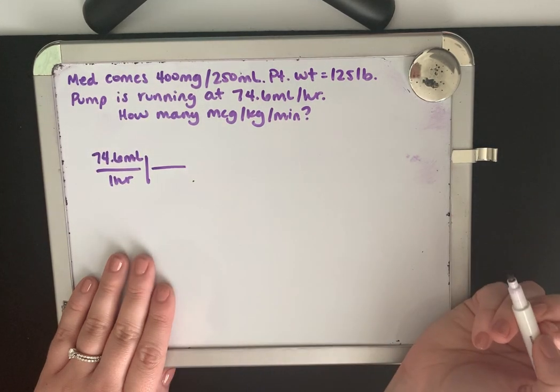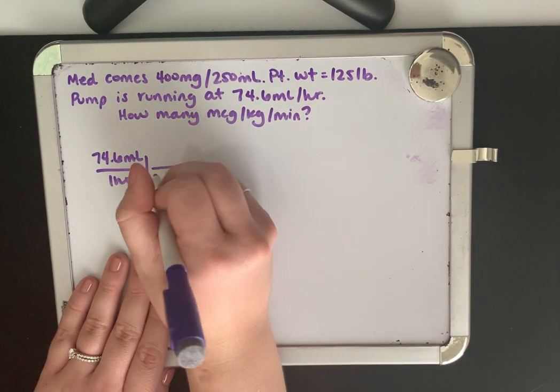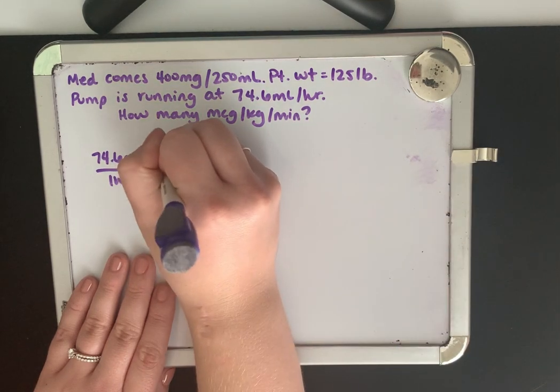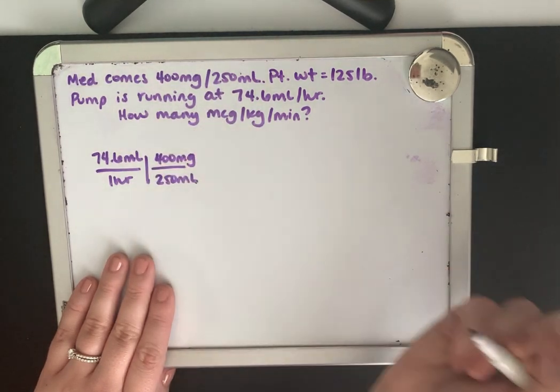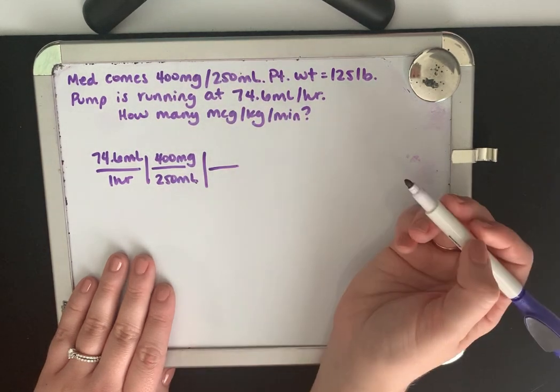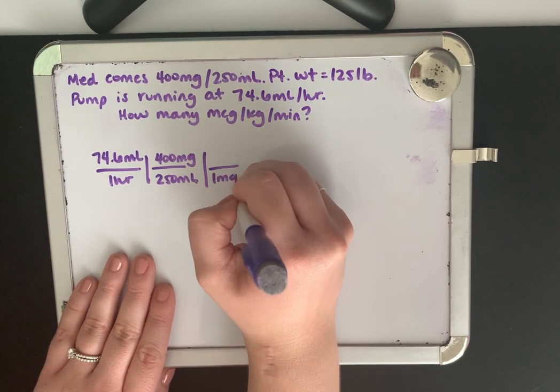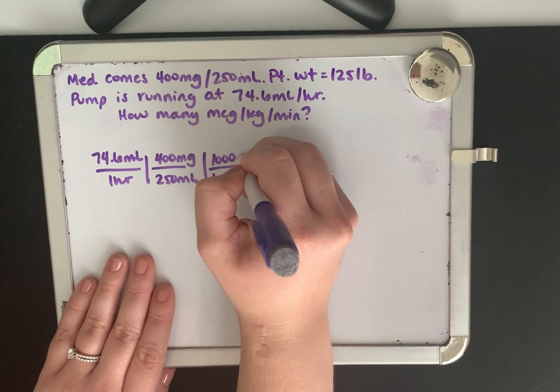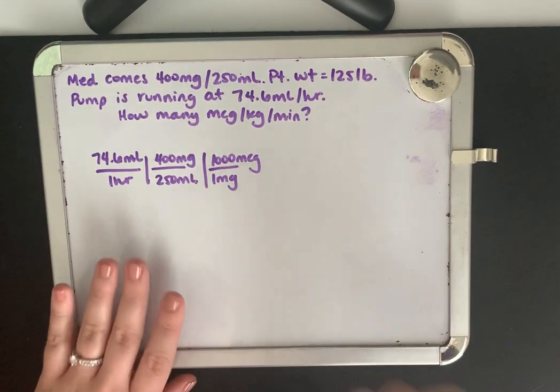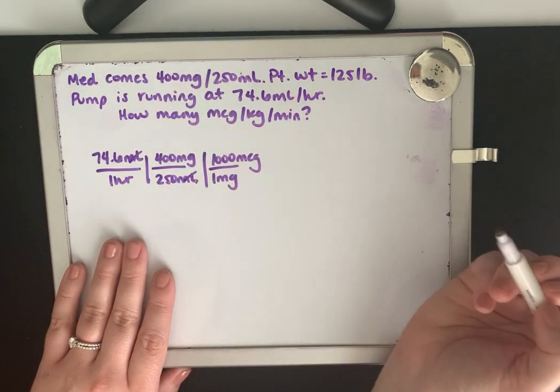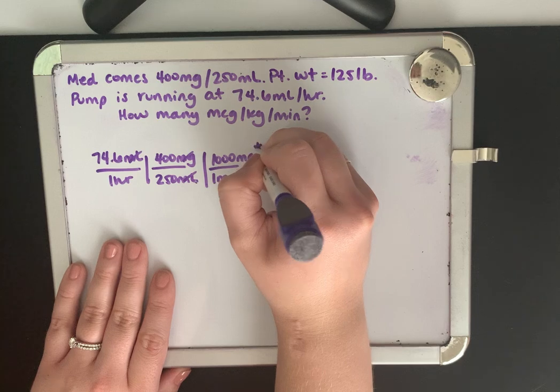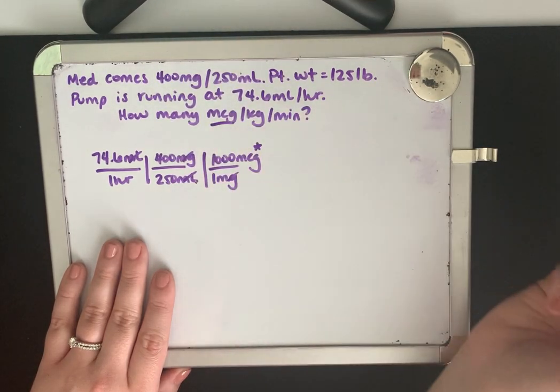Now we know our medication comes for every 250 mL we have 400 milligrams. But we need to know how many mcg, right? So let's convert. For every one milligram there's 1,000 micrograms. So let's take a pause here. Let's see if we've canceled out. mL have canceled. Milligrams have canceled. And we're left with micrograms. So we've got one part of our equation solved.